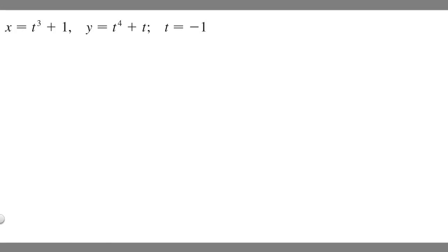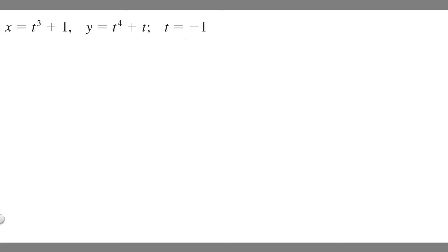In this problem, we're given parametric equations, and we're going to find the equation of the tangent line to the curve at the given value t equals minus 1. So let's go ahead and solve.